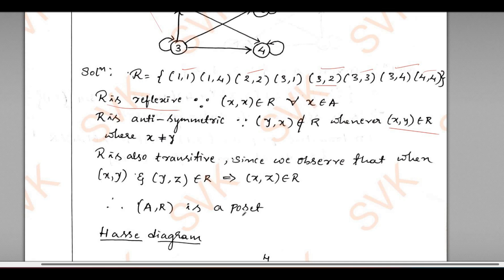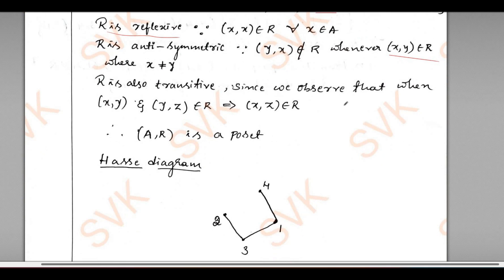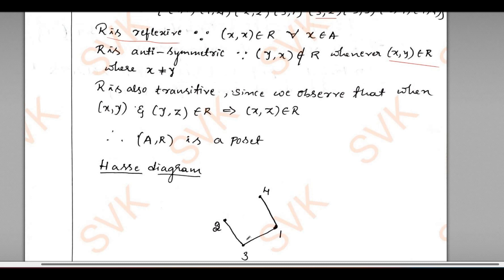After proving that it is a POSET, let us draw a Hasse diagram. Since there is a relation between 3 and 4, when I consider (3,1) and (1,4), I got (3,4). So no need of writing a line. We should not connect a connection between 3 and 4 for the Hasse diagram. Starting from 3, 3 is connected to 1.